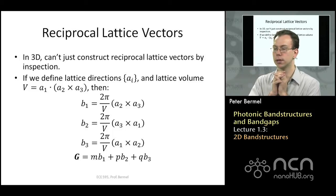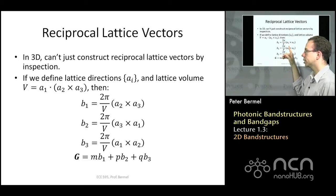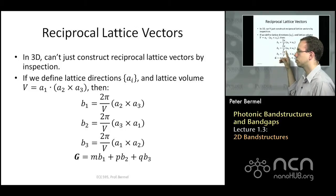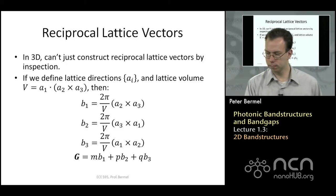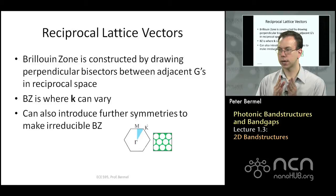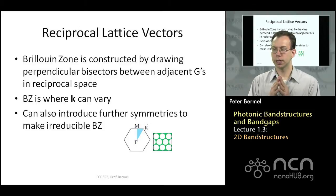We get g equals mb1 plus pb2 plus qb3. The b vectors are cross products of the other two lattice vectors: b1 comes from crossing a2 and a3, b2 from crossing a3 and a1, so these relationships are easy to remember. We don't need to worry about signs too much since we reuse them when we flip the sign of the integers. Once we have b1, b2, b3 and the g vectors constructed — whether in 2D or 3D — we want to construct the Brillouin zone.